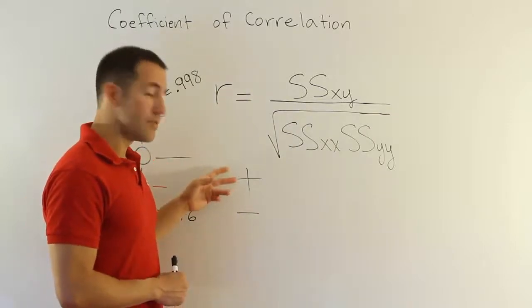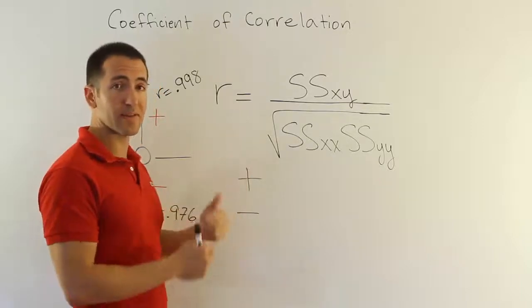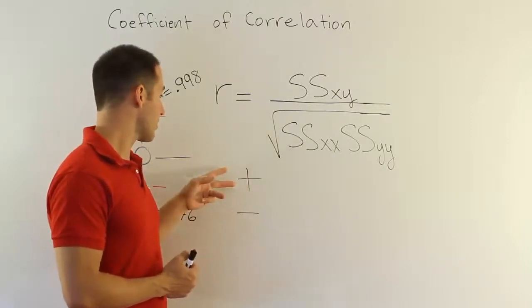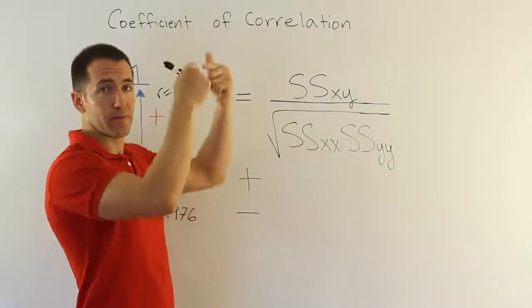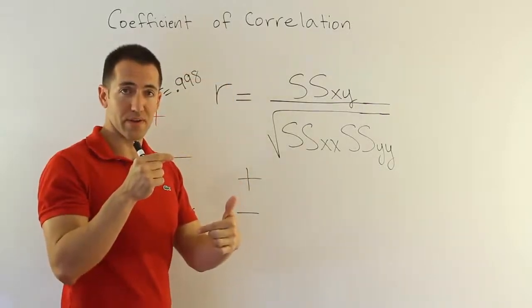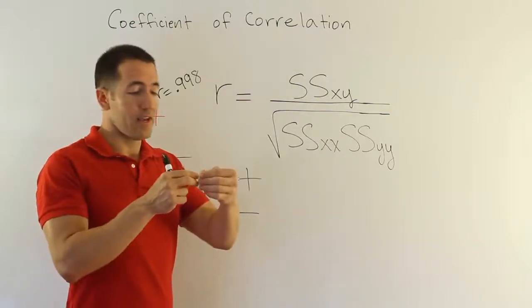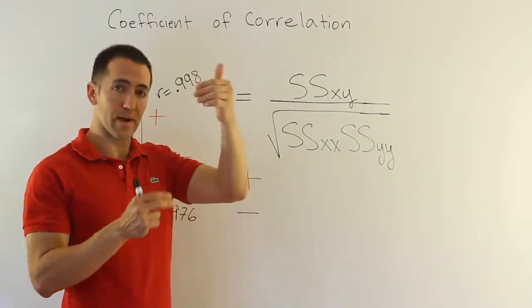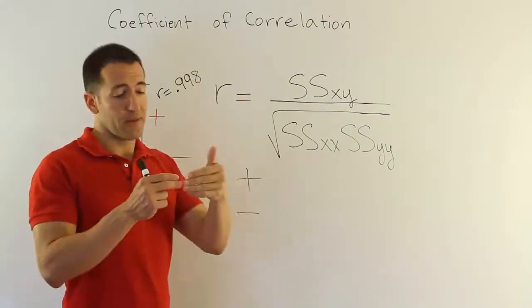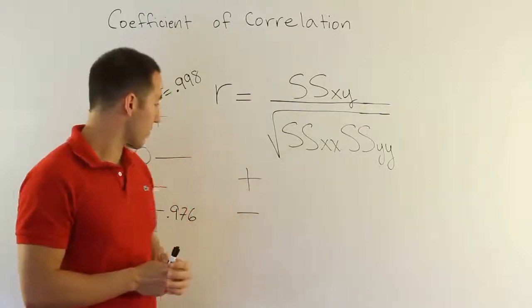So when things move together, it's positive. When things move away from one another as they go apart, that's negative. So two classic examples. Hours study, higher grades, they both move in the same direction. Lower hours of study, lower grades. Talk about a negative relationship, something like the age of your vehicle, its reliability. They go opposite directions. As the age goes up, the reliability goes down. Or as the age is younger, the reliability is higher, they go in opposite directions.